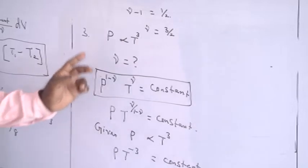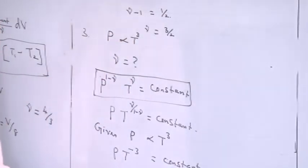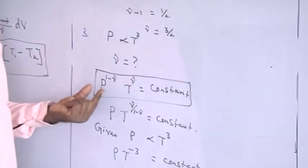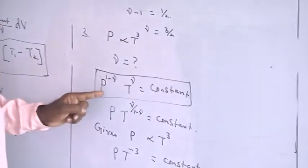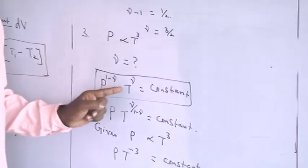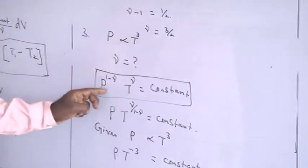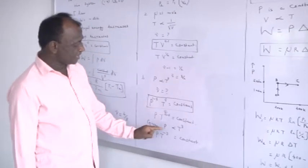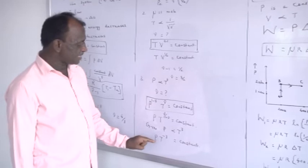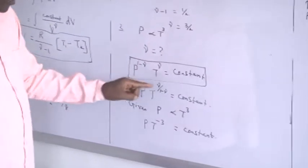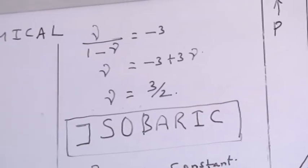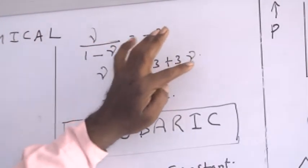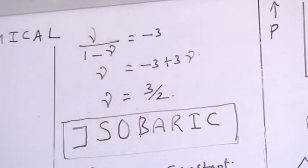In my next illustration, I am given the situation where P is proportional to T cubed, and I am asked to find gamma. This is a relation between pressure and temperature. Therefore, I use the adiabatic relation P × T^(γ/(1−γ)) equal to a constant. This equation can be modified as P × T^(γ/(1−γ)) equal to a constant. The given equation is P proportional to T³, which means P × T^(−3) is a constant. From these two equations, γ/(1−γ) equal to −3. Solving gives γ equal to −3 + 3γ, therefore γ equal to 3/2. This completes the adiabatic process.